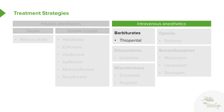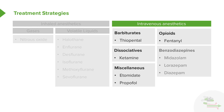We also have intravenous anesthetics. There's a large number of groups. We can use barbiturates, we can use dissociative drugs, we can use other miscellaneous drugs, we can use opioids, we can use benzodiazepines. All of these are equally valid ways of anesthetizing a patient.